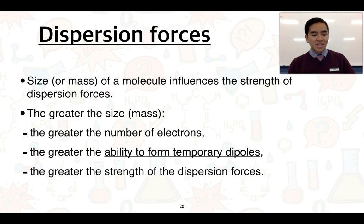So this slide just helps summarize what I've mentioned with the halogens, but in a more general case, that size is one important factor that determines the strength of these dispersion forces. So the greater the size or mass, the greater the number of electrons, therefore the greater the ability to form these temporary dipoles and induced dipoles, and therefore the greater the strength of the dispersion forces.